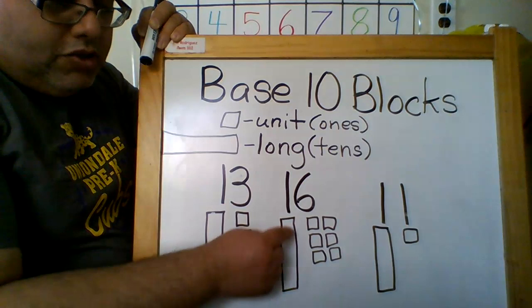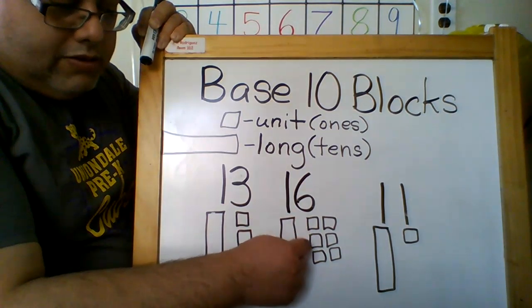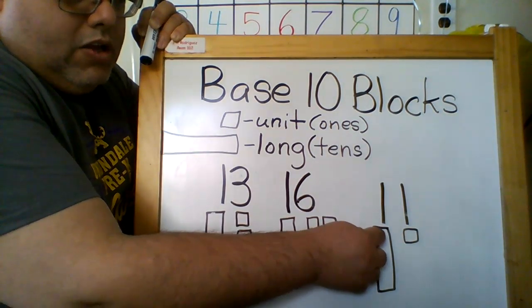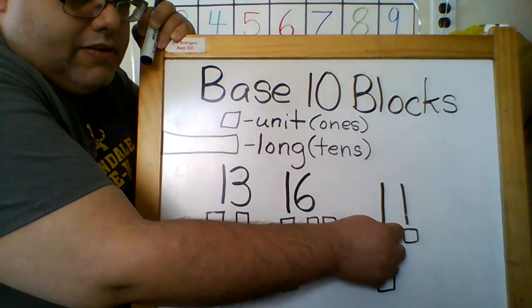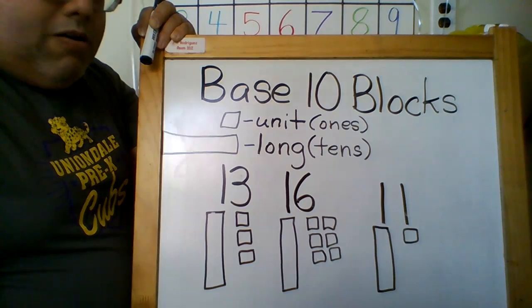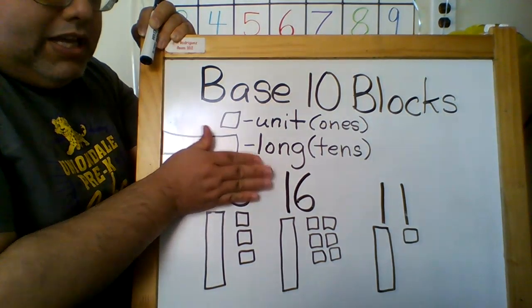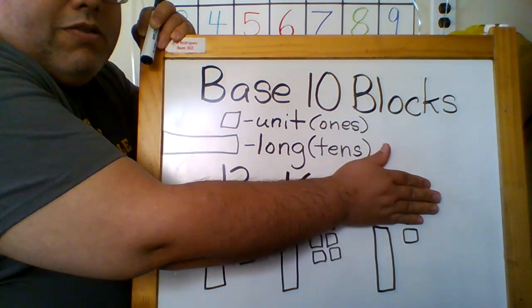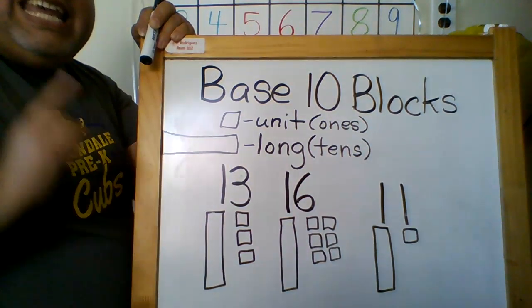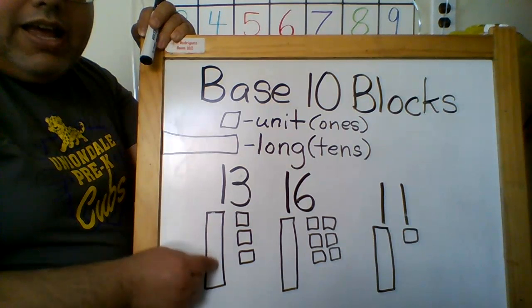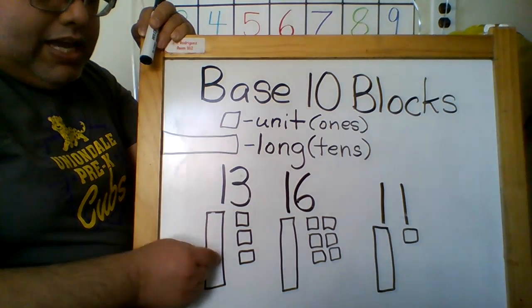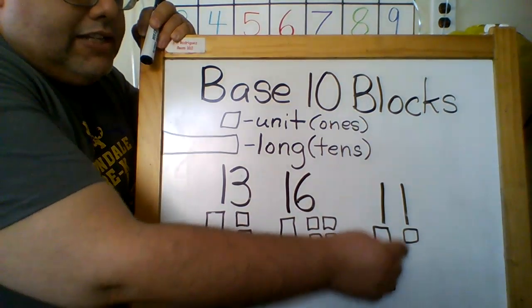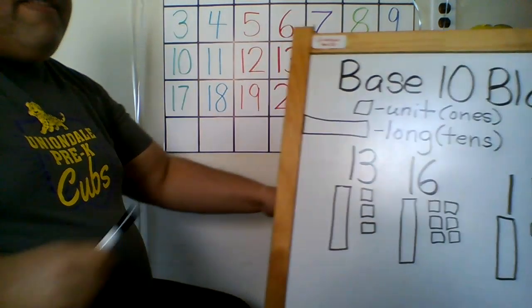For 11, I showed the decena — ten — and one more makes eleven. On the worksheet, this number does not appear. The worksheet shows only the pictures, and the children have to count starting with the long as 10, always: ten, eleven, twelve, thirteen; ten, eleven, twelve, thirteen, fourteen, fifteen, sixteen; ten, eleven. That is how they will do each of the sheets.